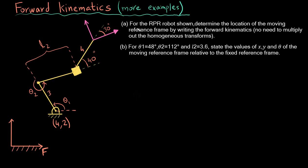The question is: for the RRP robot shown, determine the location of the moving reference frame by writing the forward kinematics. It further says there is no need to multiply out the homogeneous transforms — just write them out as H1, H2, H3, and so forth.